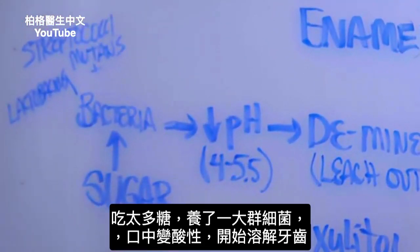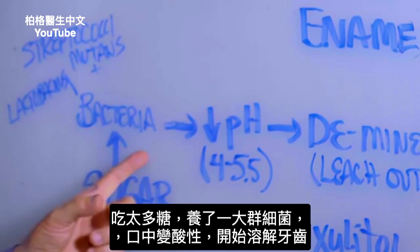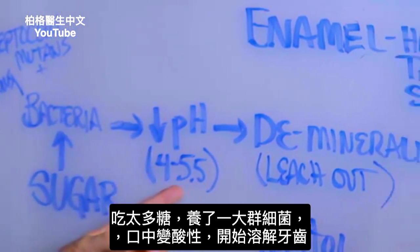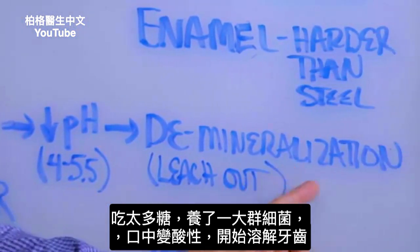So when you consume too much sugar, you get too much bacteria, you get an acidic pH, and it starts dissolving the teeth.